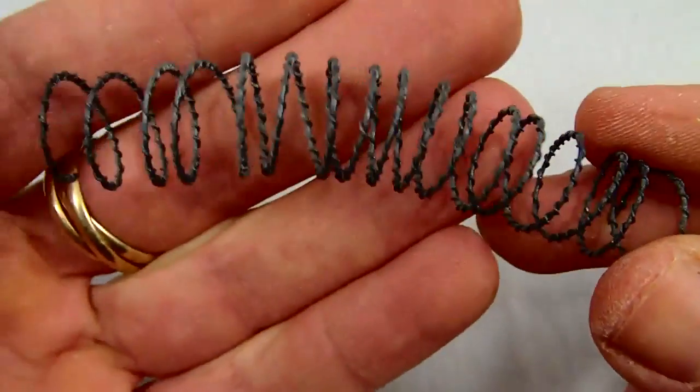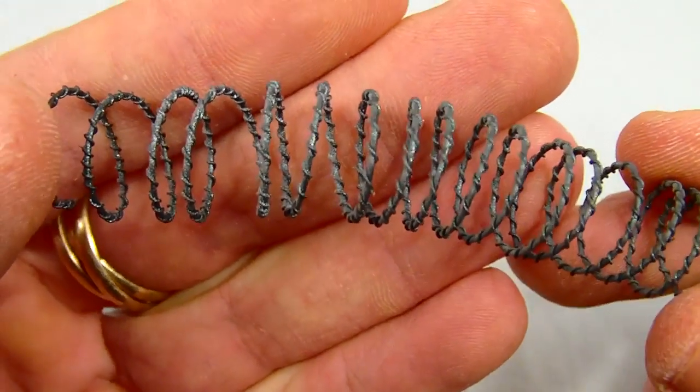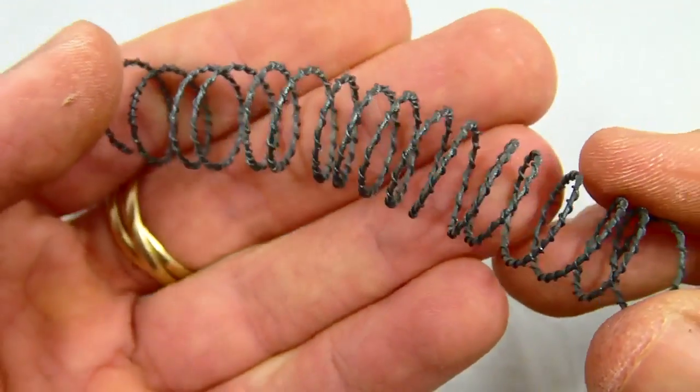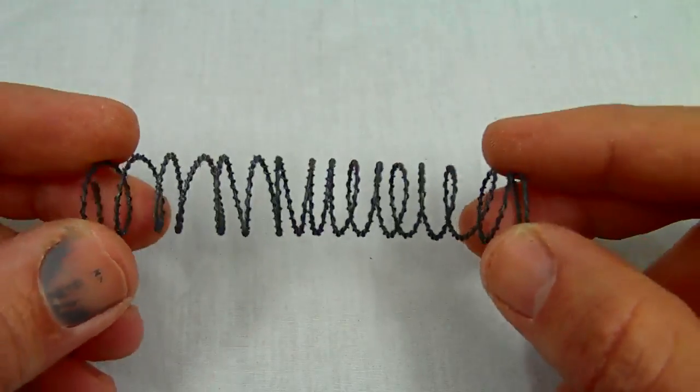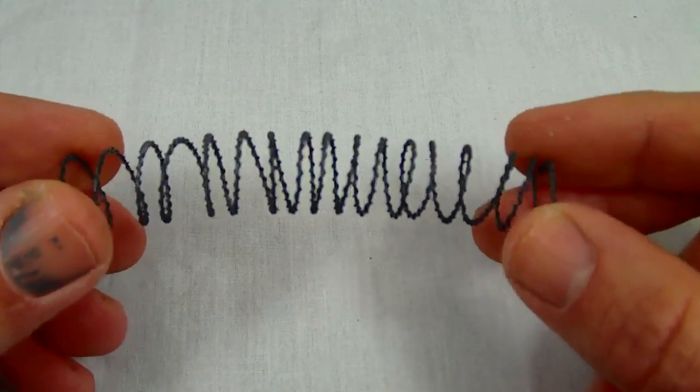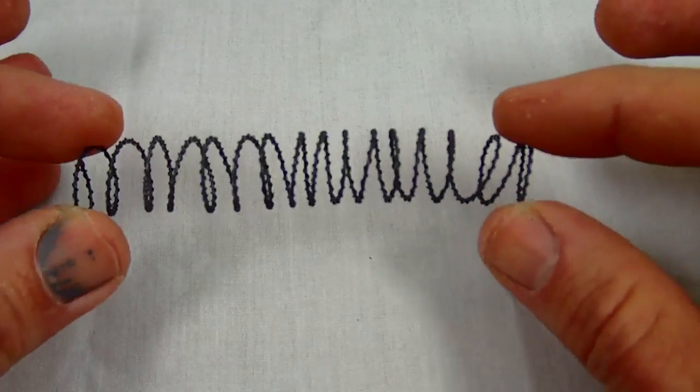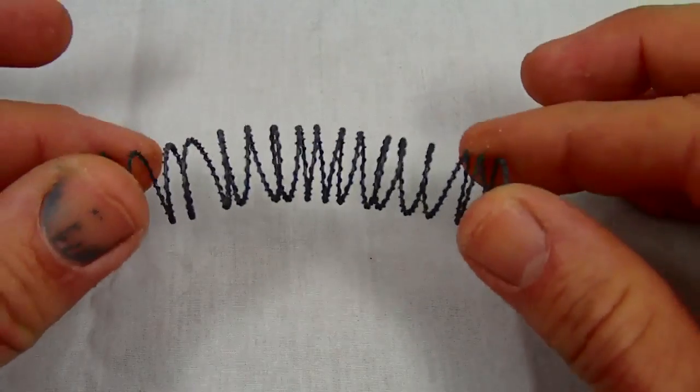On close inspection you can really tell that's just a wire wrapped around wire. It doesn't really look like razor wire. It's an excellent do-it-yourself project if you don't want to spend the money for something, but I wanted to just step it up a notch if I could.